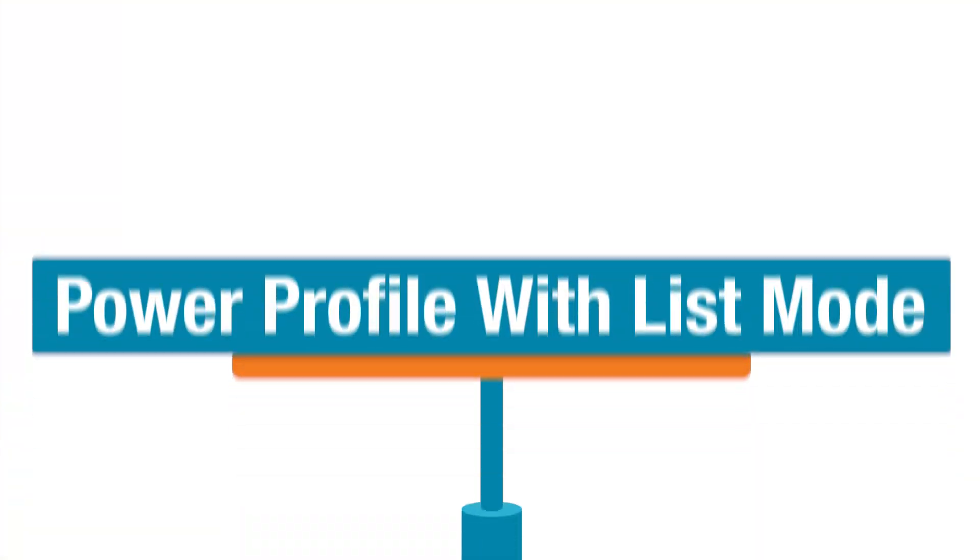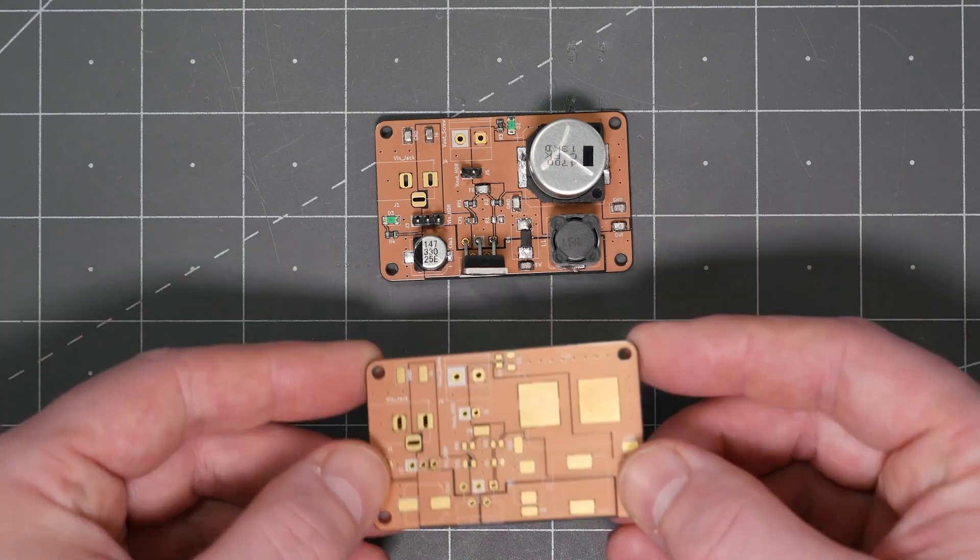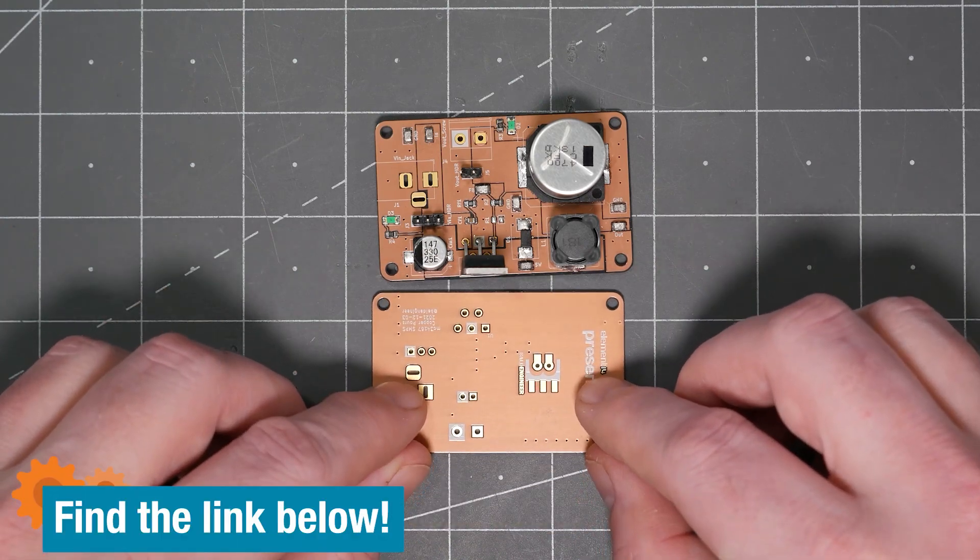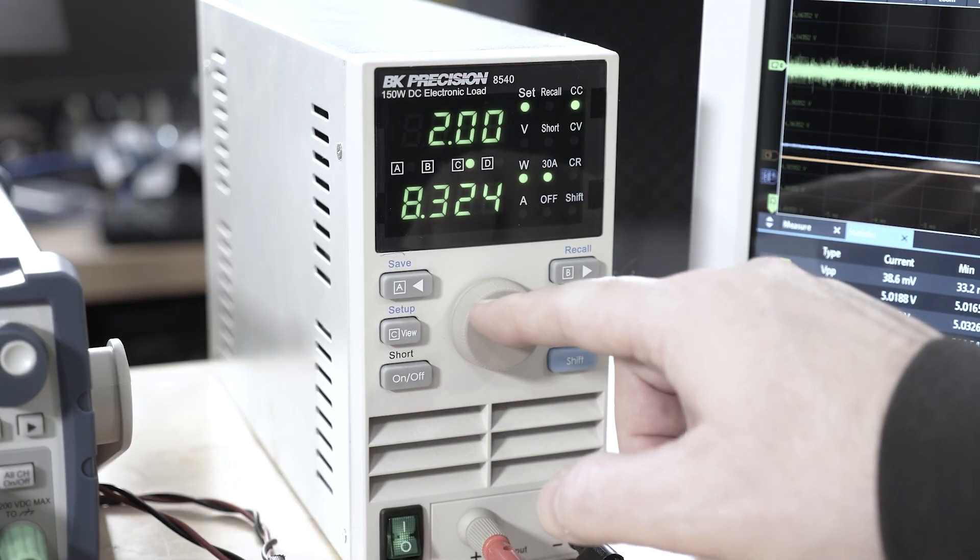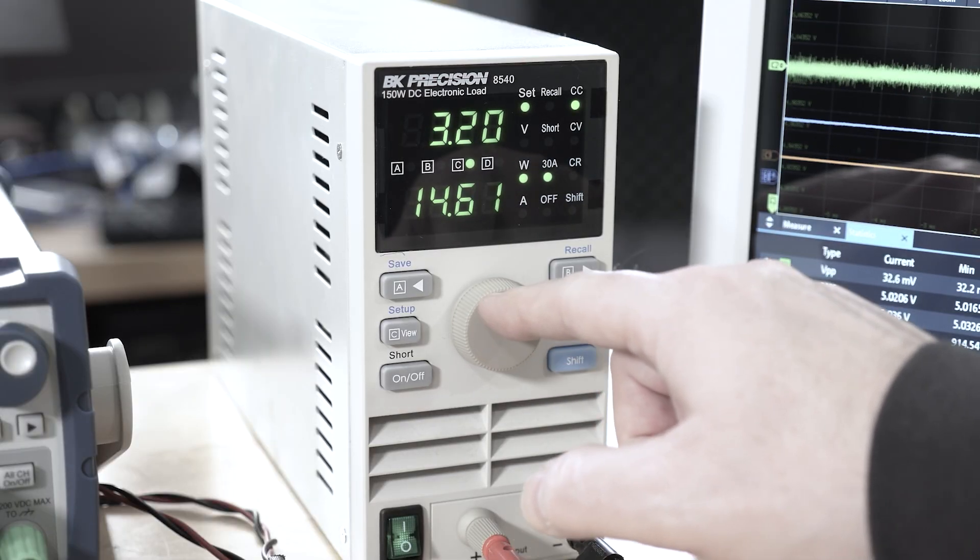Again, for general details of how a load works, I have another video on that. So, let's focus on some of the more interesting features of this one, starting with the list function. Loads are often used to test DC to DC converters. Here's one I designed for another video. In that video, I manually changed the settings on a different piece of gear. This time, let's do a little bit of automation. Did somebody say automation?